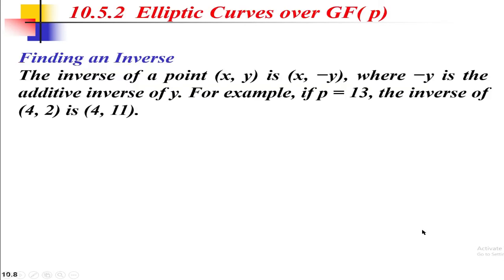Now let's discuss how to find the inverse of a point. The inverse of a point (x, y) is (x, −y), where −y is the additive inverse of y. For example, with p = 13 as modulus, the inverse of (4, 2) is (4, 11). Here x = 4 and y = 2, so the inverse is (4, −2). To calculate the additive inverse of y, we use the formula p − y mod p. So 13 − 2 = 11 mod 13, giving us 11. Therefore the inverse of (4, 2) is (4, 11).